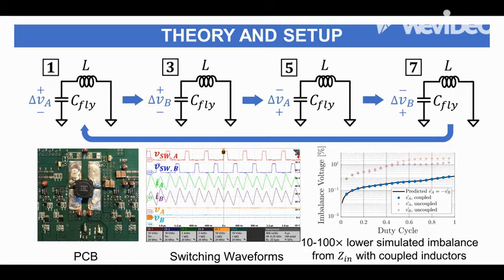And this is verified by the simulation in the bottom right, showing that with the source impedance, the coupled inductor converter has significantly lower imbalances.